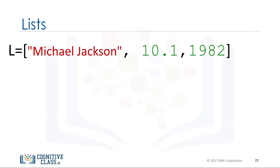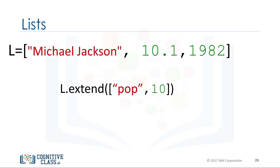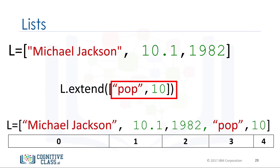Lists are mutable, therefore we can change them. For example, we apply the method extend by adding a dot followed by the name of the method, then parentheses. The argument inside the parentheses is a new list that we are going to concatenate to the original list. Instead of creating a new list, the original list L is modified by adding two new elements. To learn more about methods, check out our video on objects and classes.